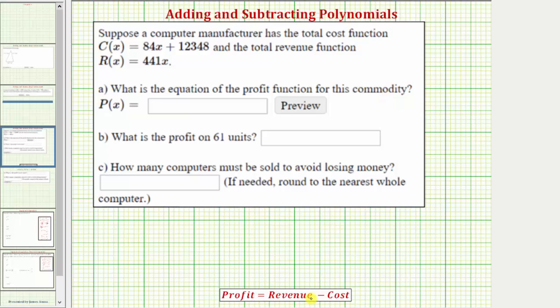Because profit is equal to revenue minus cost, the profit function P(x) is equal to the revenue function R(x) minus the cost function C(x). Which means the profit function P(x) is equal to the revenue function 441x minus the cost function, which is 84x plus 12,348, and now we'll find this difference.